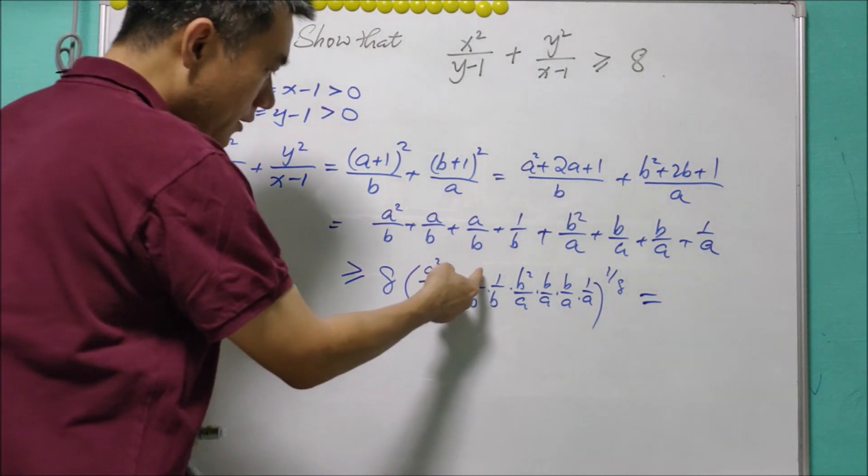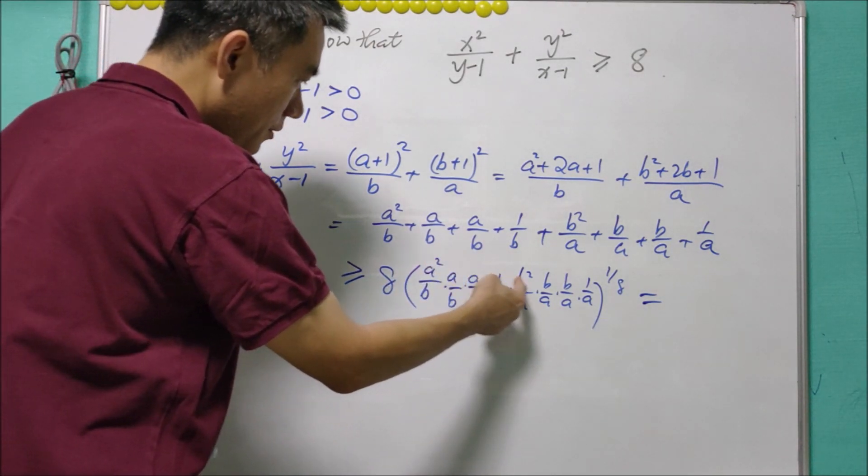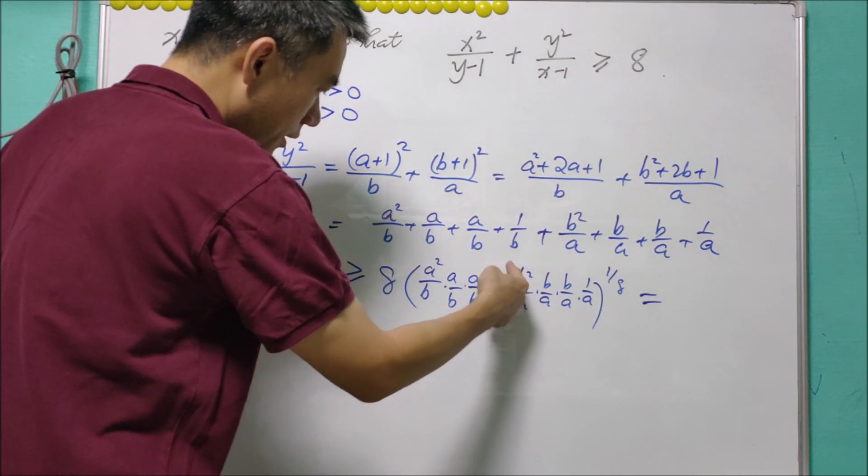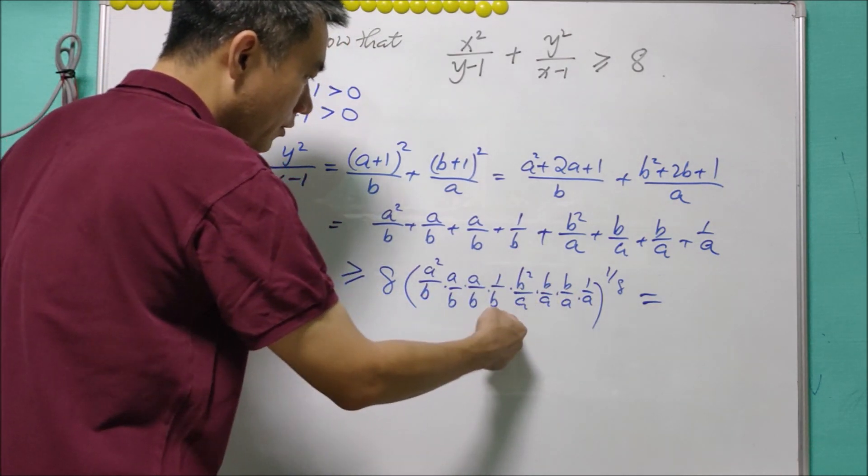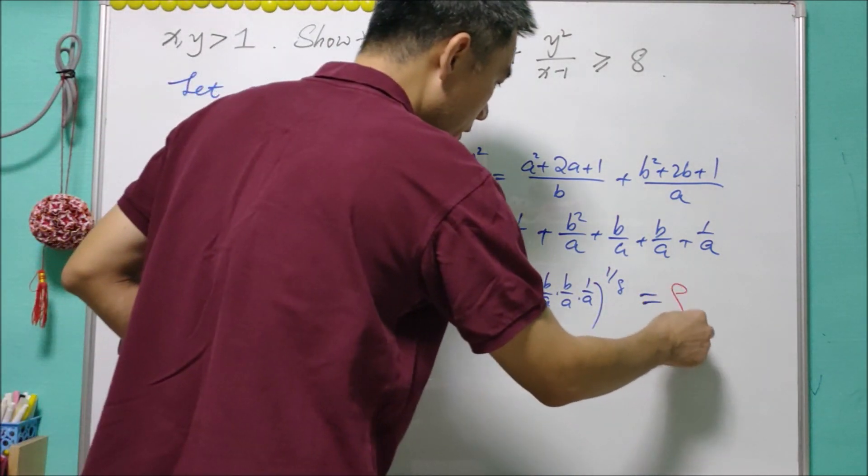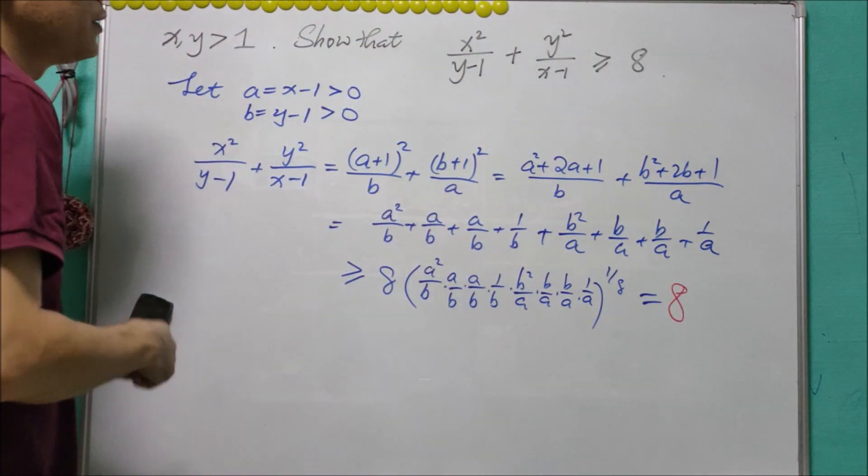And you can see that the numerator will be a to the power of 4, b to the power of 4, denominator b to the power of 4, a to the power of 4, and they all cancel off, and therefore it is equal to 8. So we have proved the inequality.